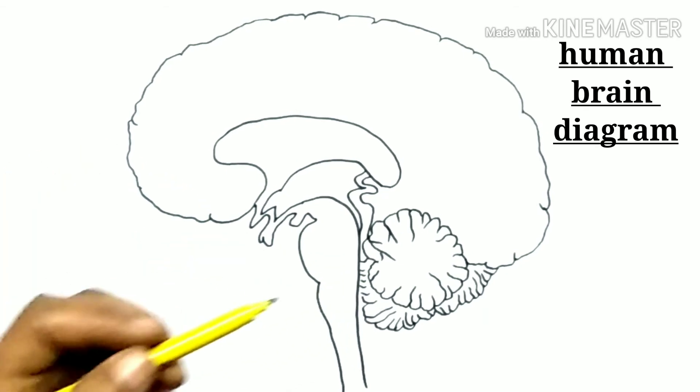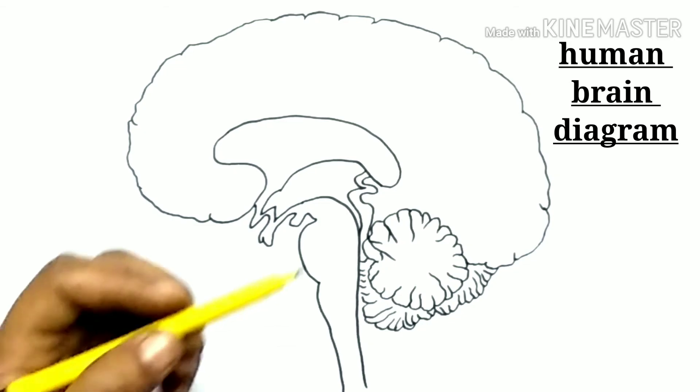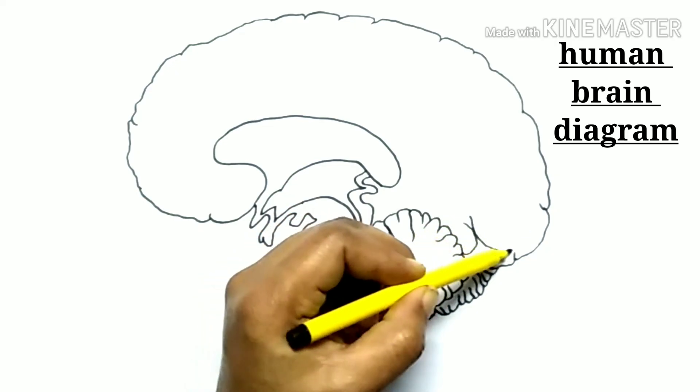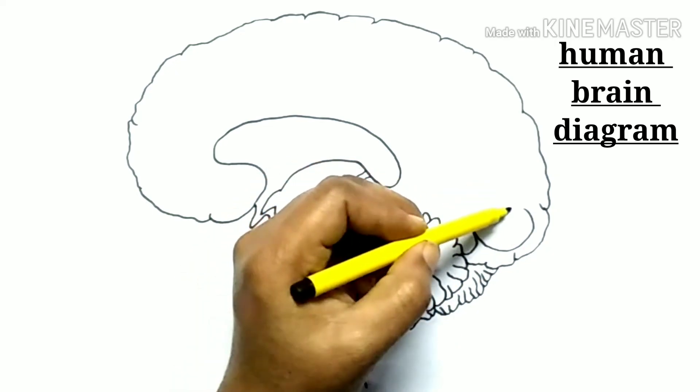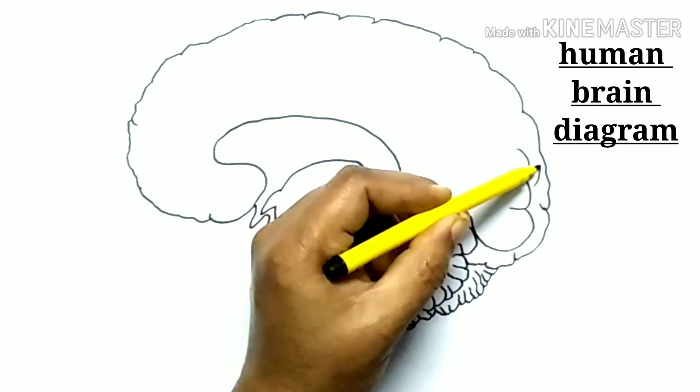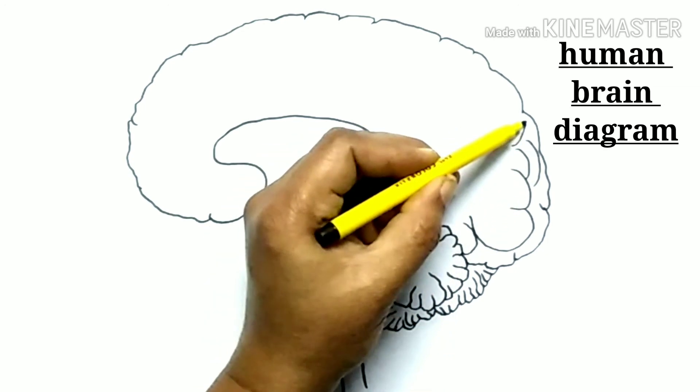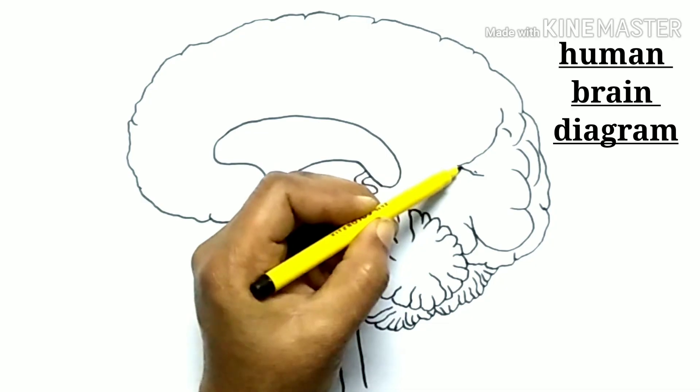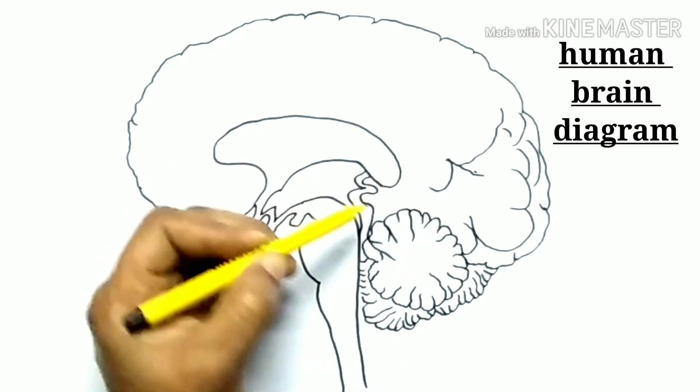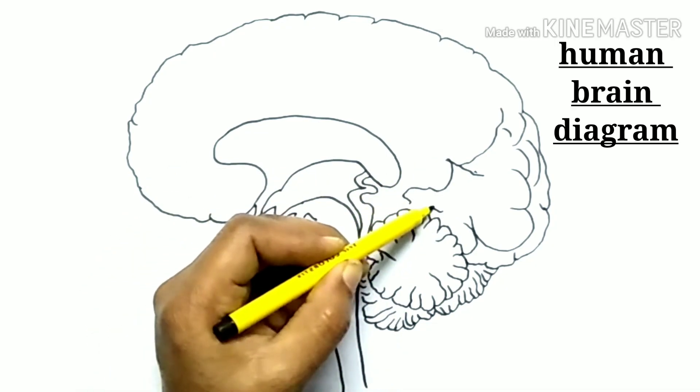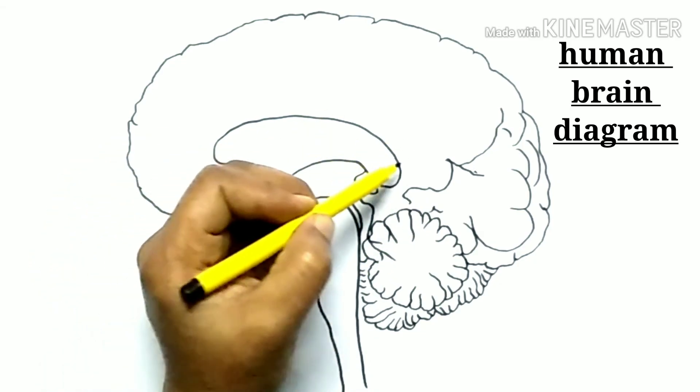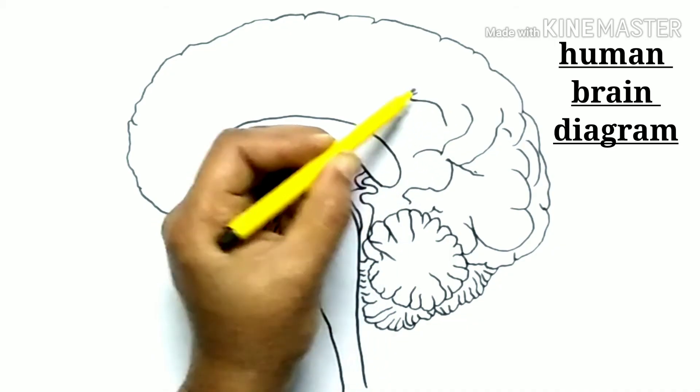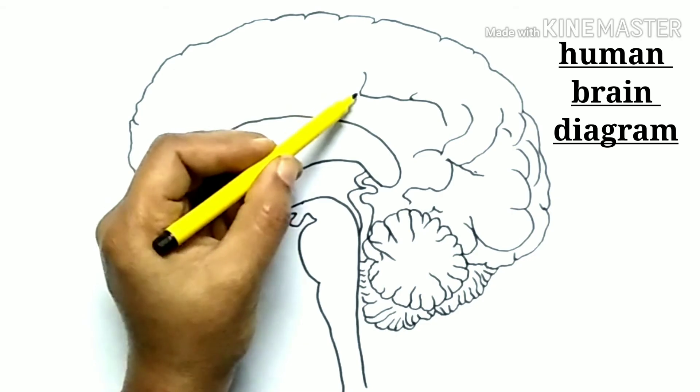It weighs about 1.5 kilograms. The brain makes up about 2% of human body weight. The cerebrum makes up 85% of the brain's weight.